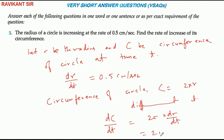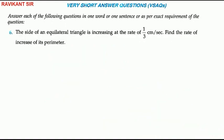So dC/dt = 2π × dr/dt = 2π × 0.5 cm per second = π cm per second. This is the answer. Thank you.